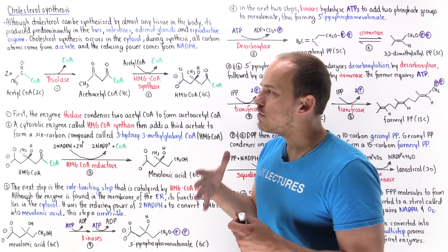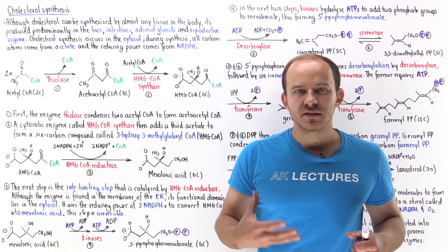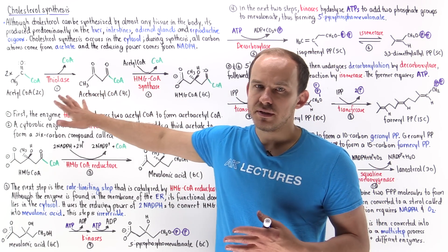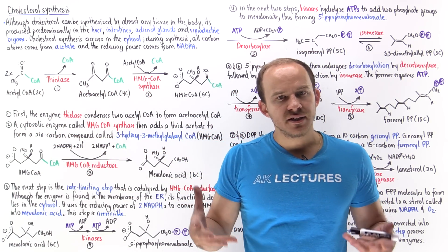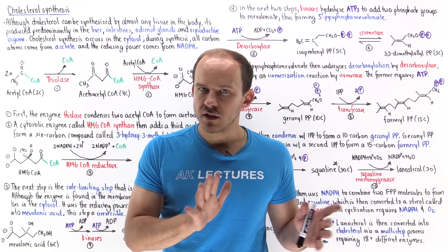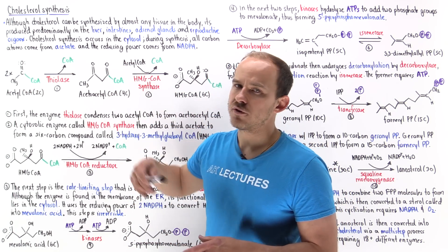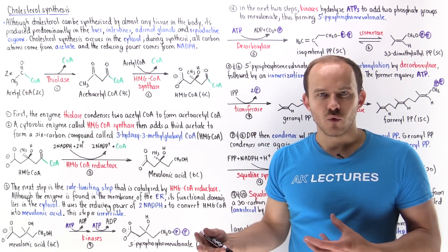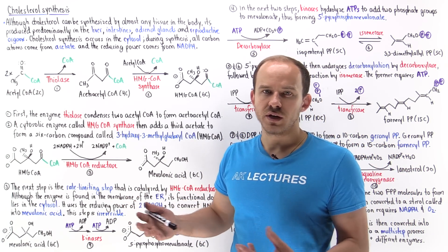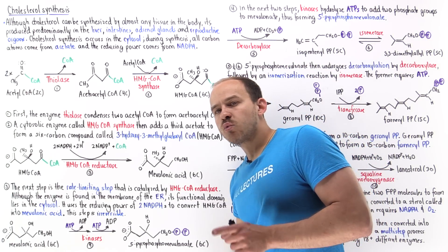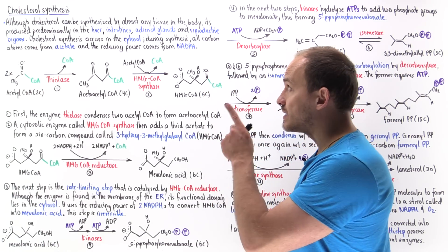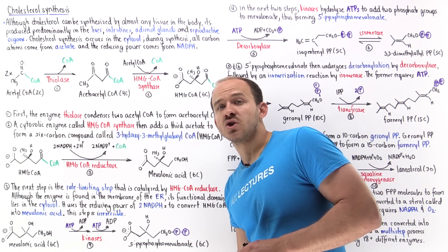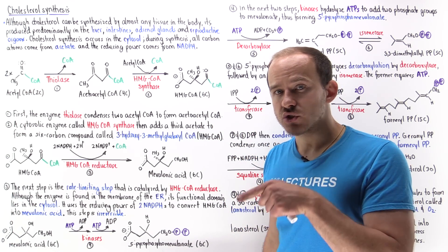What I want to focus on is how the cells of the body can actually synthesize cholesterol from scratch. Although cholesterol can be synthesized by essentially any tissue in the body, the majority of the cholesterol actually comes from the liver, the intestines, the adrenal cortex, and the reproductive organs such as the testes, the ovaries, and the placenta. Regardless of the tissue type that synthesizes cholesterol, cholesterol synthesis always occurs in the cytosol of the cell.